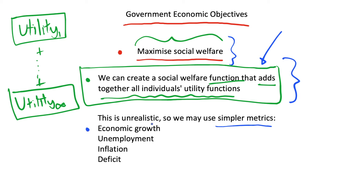So what are these objectives? Number one, we'll often see some sort of economic growth target — around 2.5% in a developed economy. We want to be growing at a sustainable economic growth rate: not too low, because that means our economy is not expanding and we're not producing more goods and services, but not too fast either, as that would be unsustainable and could have negative effects such as pollution. Economic growth is typically measured with GDP.